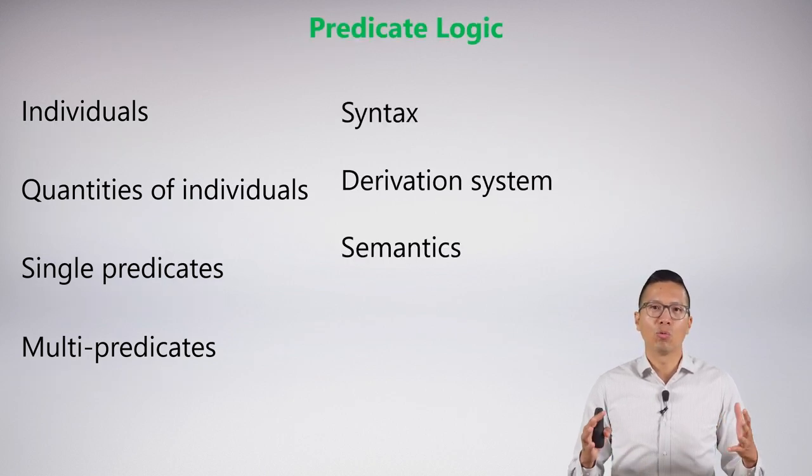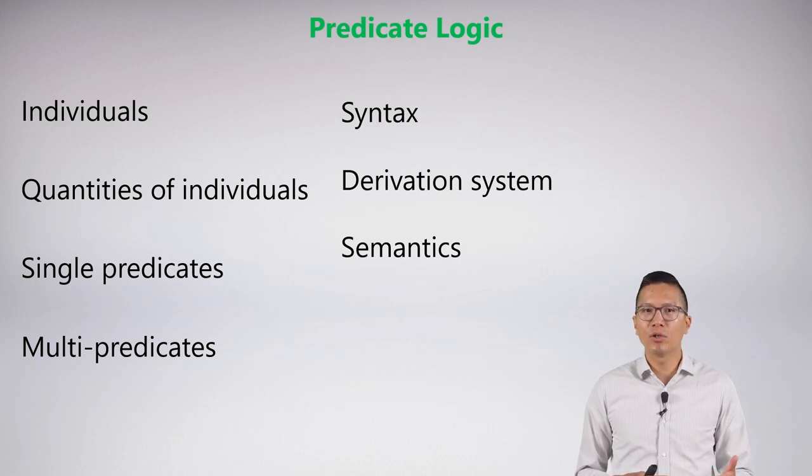And here is what we need. We need those things, the individuals, quantities of individuals, single and multi-place predicates. And just like we did in the first half of the course for sentential, we're going to develop our syntax, our derivation system, and our semantics so that we can understand. And this will really round out first-order logic, which is the goal of this course.